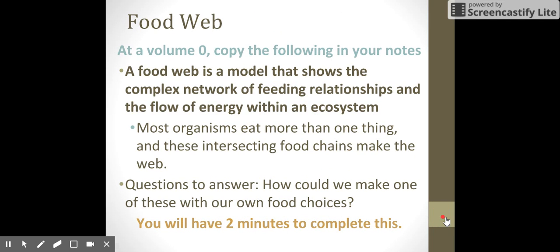Finally, we're going to end it up with food webs. A food web is a model that shows the complex networks of feeding relationships and the flow of energy within an ecosystem. So most organisms eat more than one thing and they intersecting food chains as a result. So my thing is how can we make one of these with our own food choices as humans? And that takes us to the end of the video.